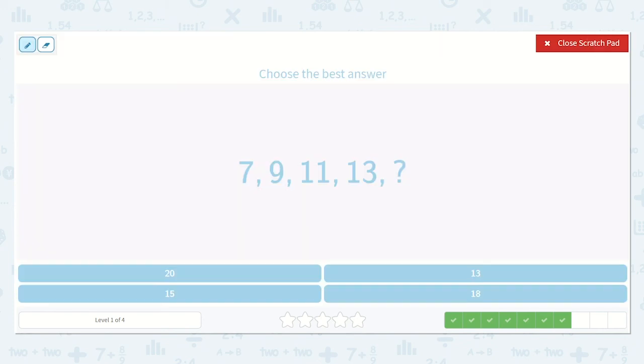Now it says choose the best answer. Well, it goes from seven to nine to 11 to 13, and then there's a missing number. Let's see if we can find a pattern. Well, if this was going up by one, the next number would be eight, which it is not. But the next number is nine. So that looks like two more than seven. Let's try that. Seven plus two.